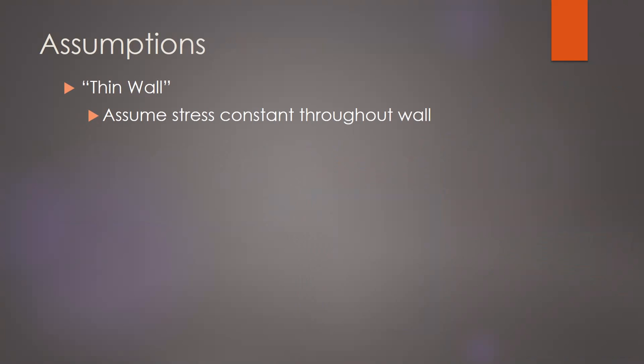When I say thin-walled, I specifically mean that the ratio of the interior radius to the thickness is greater than or equal to 10. Practically speaking, the outside and inside radii are going to be almost the same, but technically it's the inside radius we're referring to. We want that ratio to be bigger than 10, and as we go through our calculations we'll find that some of the assumptions we're making are only valid when this is true.